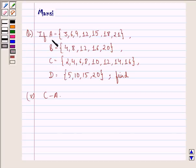The question says: If A equals the set {3, 6, 9, 12, 15, 18, 21}, B equals the set {4, 8, 12, 16, 20}, C equals the set {2, 4, 6, 8, 10, 12, 14, 16}, and D equals the set {5, 10, 15, 20}, then find part 5, which is C minus A.